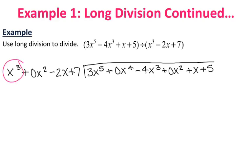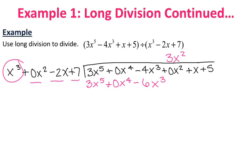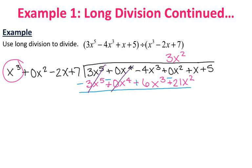Focusing on the first term: what times x cubed gives me 3x to the fifth? That's 3x squared. I write that above the x squared term, then multiply 3x squared by the entire divisor: 3x squared times x cubed is 3x to the fifth, times 0x squared is 0x to the fourth, times negative 2x is negative 6x cubed, and times 7 is 21x squared. I subtract by drawing the line and changing signs. The first terms cancel, and the second terms also cancel because they're zeros. That leaves 2x cubed minus 21x squared, and I bring down the next term.